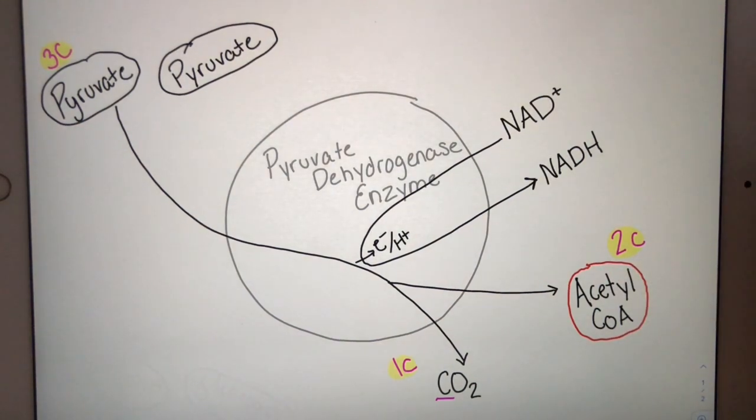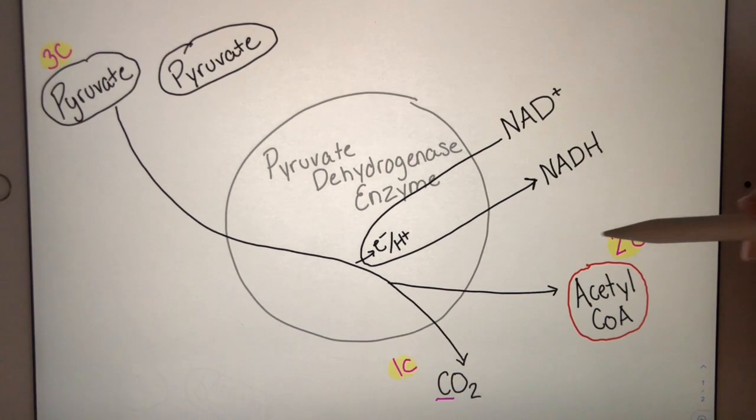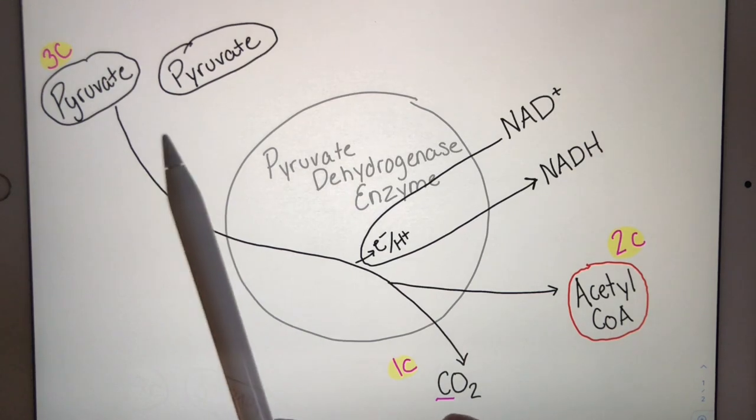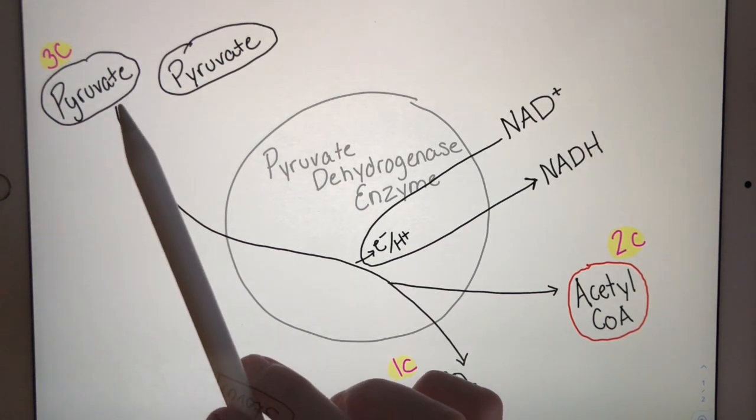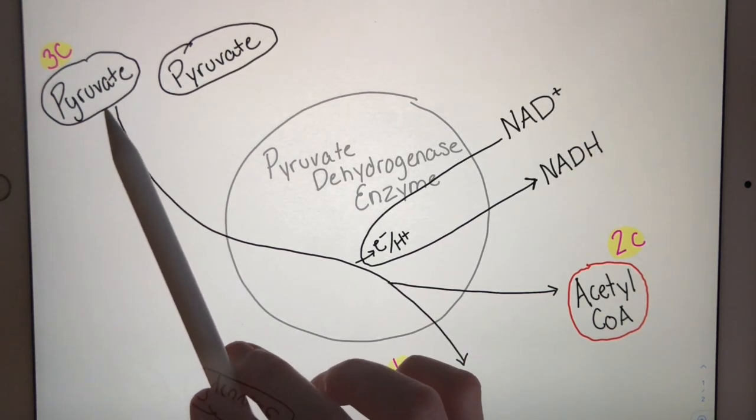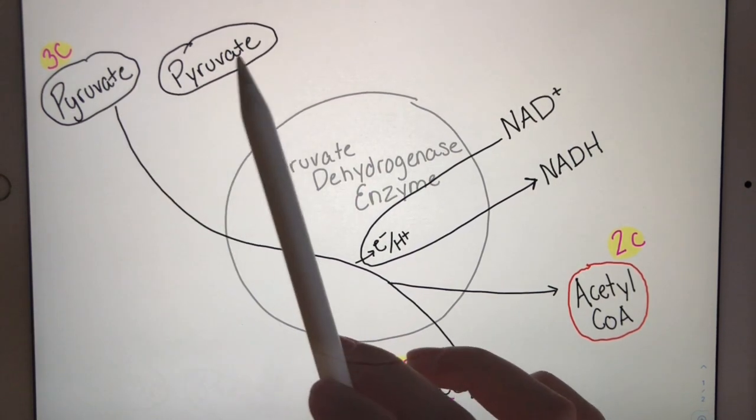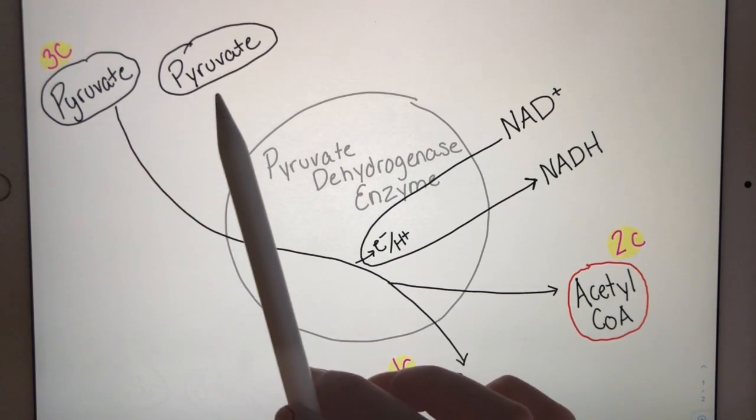An important thing to remember, when asked how many molecules of acetyl-CoA are formed in pyruvate processing, many students will say one, because we process the pyruvate and we get an acetyl-CoA. However, we have to remember that our glucose molecule wasn't transformed into one molecule of pyruvate. Rather, our glucose molecule was broken into two molecules of pyruvate.